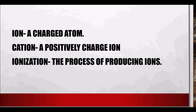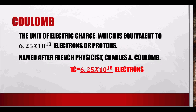An ion is a charged atom — either it has a deficit or an excess of electrons. As long as there is a change in the normal number of electrons of that atom, it is said to be charged. A cation is a positively charged ion. Ionization is the process of producing ions — the process of transferring an electron from one atom to another.